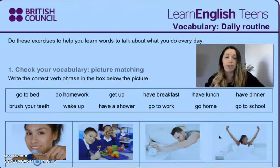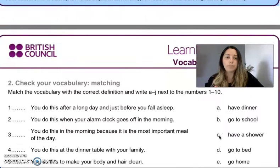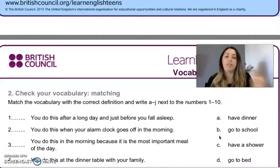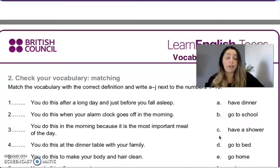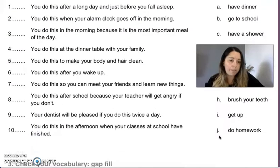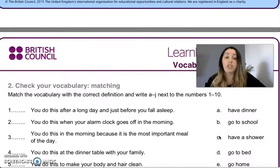Vamos a pasar a la actividad número dos, para la cual ya les voy a dejar explanations and instructions. Activity number two is matching again — hay que unir otra vez, but this time you have to match the definition — que significa la definición de cada acción. On the right, a la derecha, tienen todas las expresiones: have dinner, go to school, have a shower, go to bed, go home, wake up, have breakfast, brush your teeth, get up, and do homework. Y por otro lado tienen las definitions.